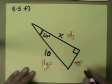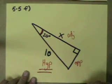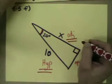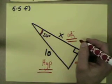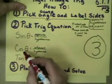Ask myself the two questions. What side do I know? Hypotenuse. What side do I want to know? Adjacent. Remember that. Adjacent and hypotenuse. Which one uses the adjacent and the hypotenuse? Well, that's going to be the cosine.